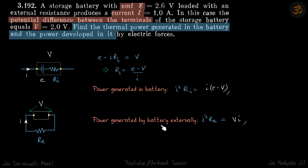Power generated by the battery externally will be I²RE, and I times RE is V. See, the potential across the terminals is the same as potential across the battery. So we can directly write the power generated here is VI.